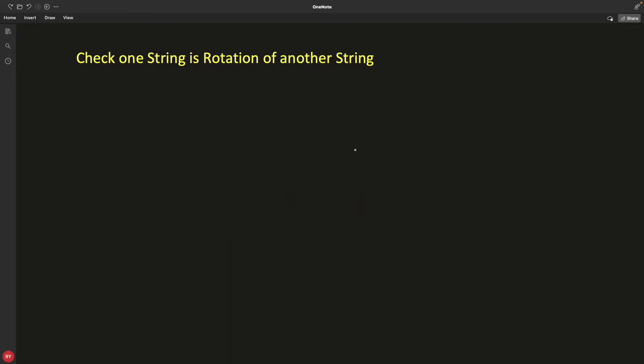Hello guys, this is Rupesh and you are watching CppNerds video series on string related interview question series and this is question number 6. And the question is, check one string is rotation of another string or what?